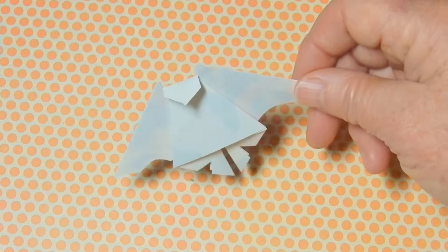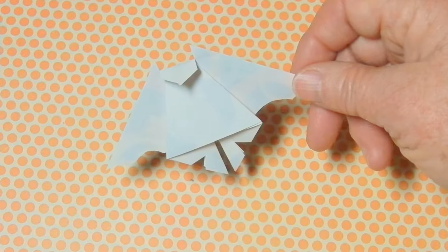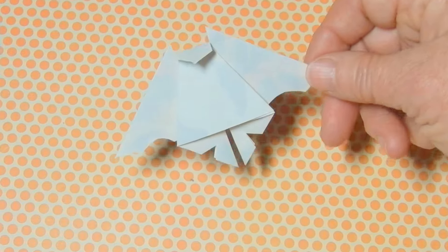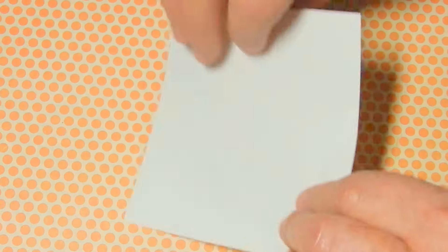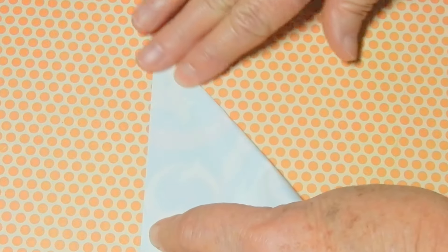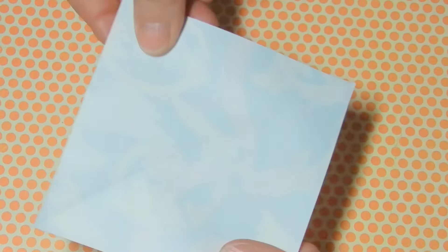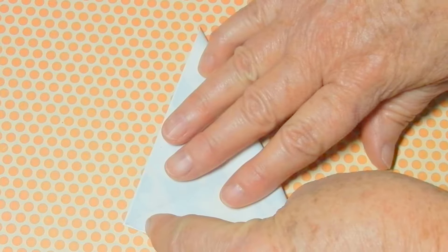Origami Bat Instructions for completing our Halloween bookmark. Take a square and fold it in half diagonally, corner to corner on one side and also corner to corner on the other side.